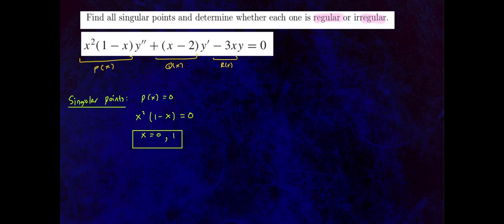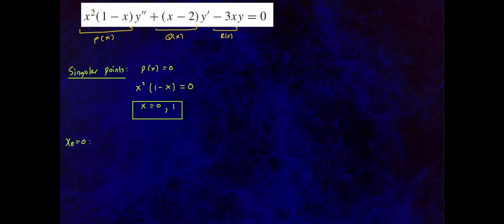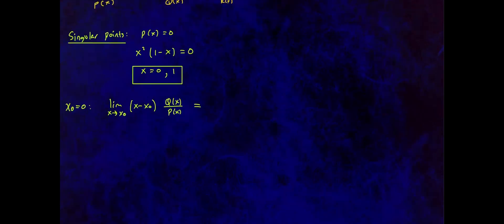Now we classify them by computing the limits for each singular point. Starting with x0 equals 0: take the limit as x approaches 0 of (x minus 0) times q of x over p of x, and check if it's finite. If finite, continue to the second limit — x approaches 0 of (x minus 0) squared times r of x over p of x — which also needs to be finite to claim x0 equals 0 is a regular singular point.